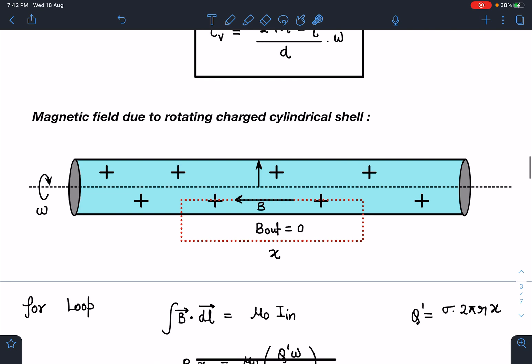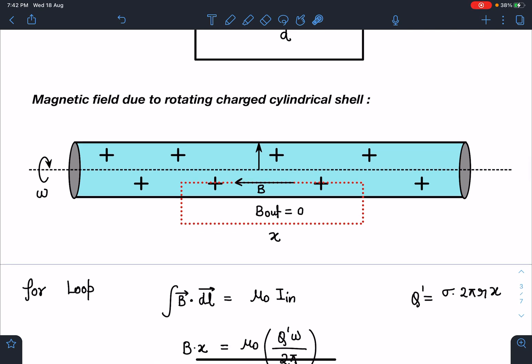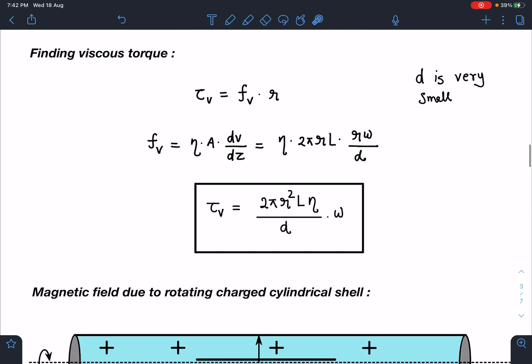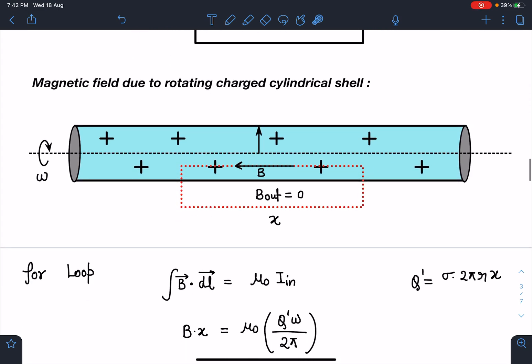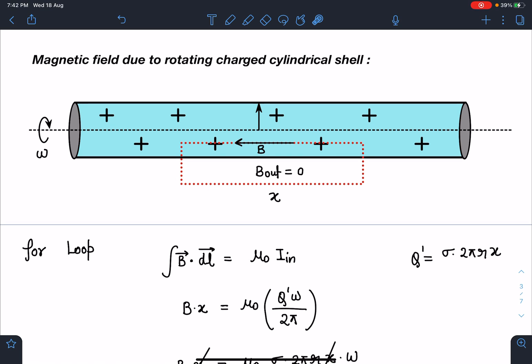The next step is finding the magnetic field of the charged cylindrical shell. This is a mains level question, but it is just one step of this problem. He is combining this problem with another concept here.